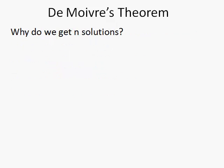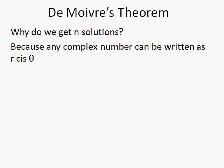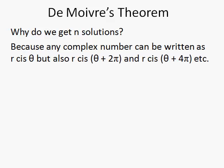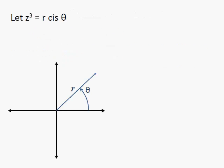Now I'm going to discuss why we get n solutions. This isn't necessary in order to solve the problem, but it helps explain why we actually have these different solutions. Any complex number can be written in polar form, but it can also be written in the same form with multiples of 2π added to the argument. That yields different solutions.